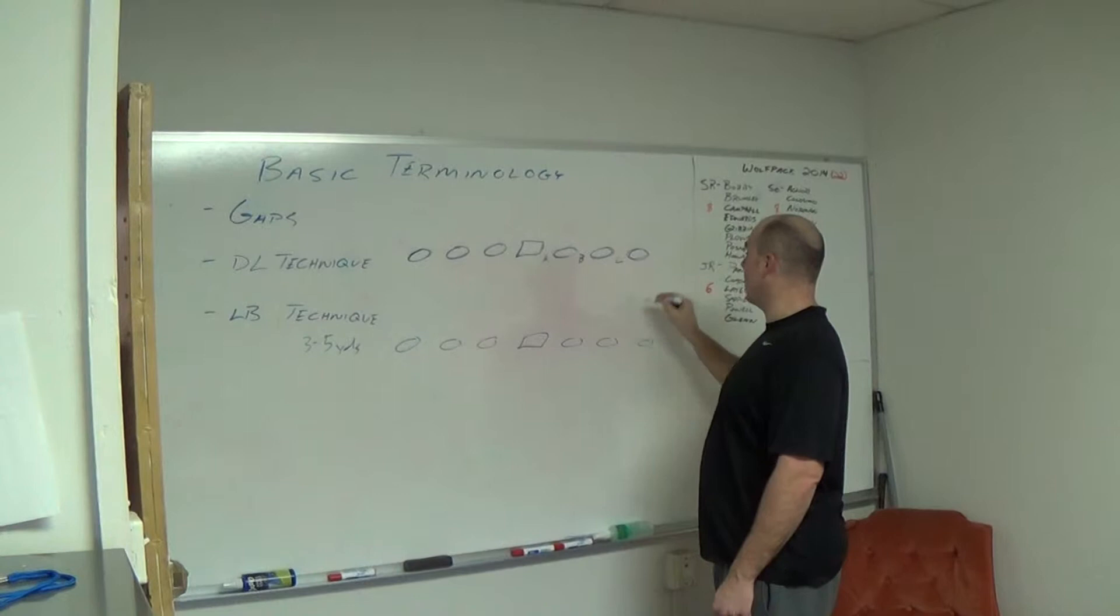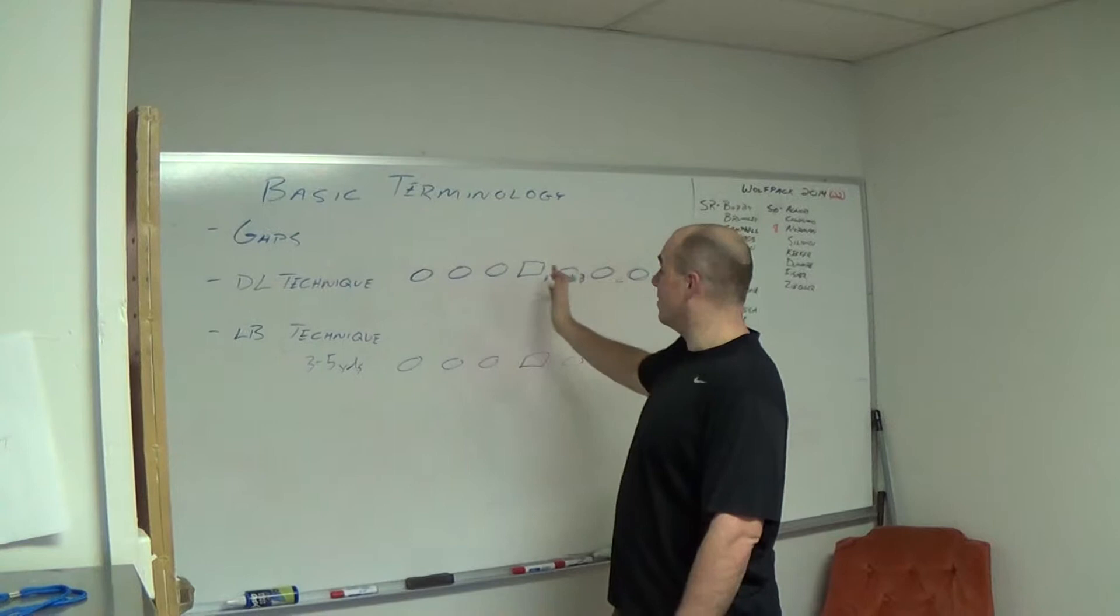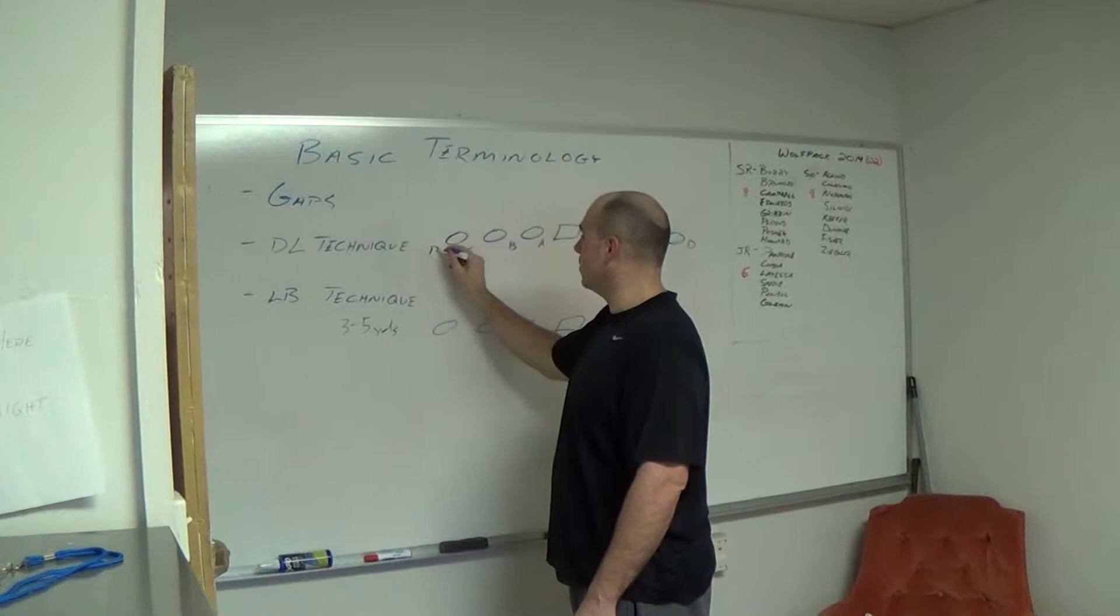Tackle, tight end, C gap. Anything outside the tight end is the D gap. It is the same way to the right as it is to the left. So A gap, B gap, C gap, D gap.